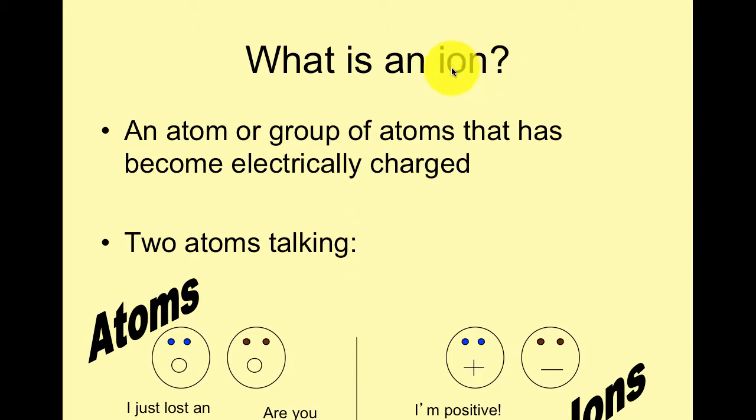So first, the term ion. What is an ion is what you're writing in your notes. An ion is an atom or group of atoms that has become electrically charged. The atom was neutral with equal positive and negative charges, but now it's electrically charged because it either lost an electron and became positive, or gained an electron and became negative.